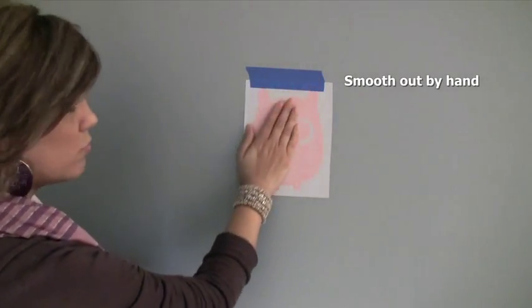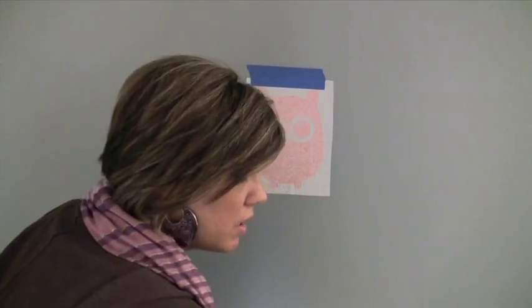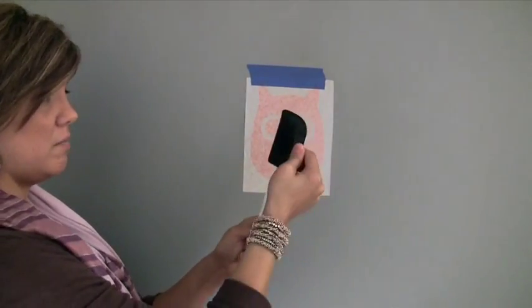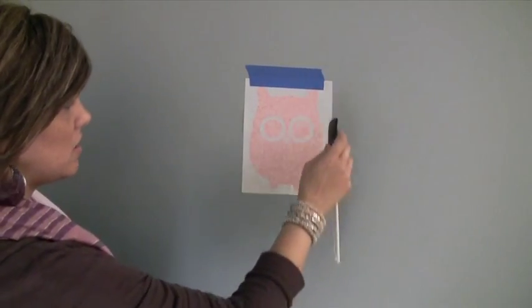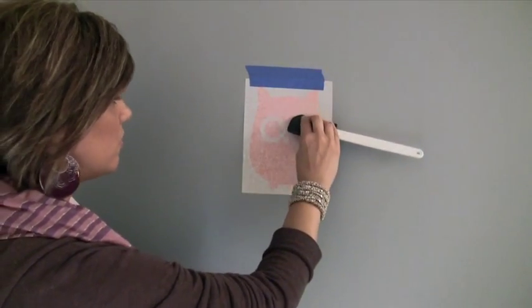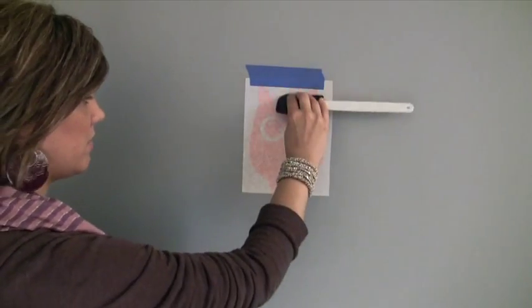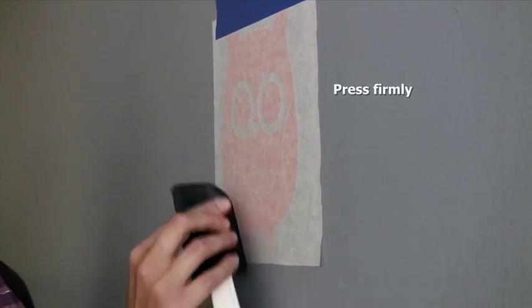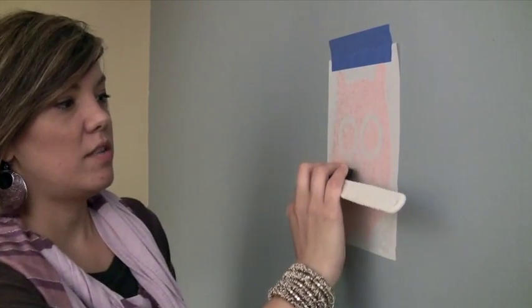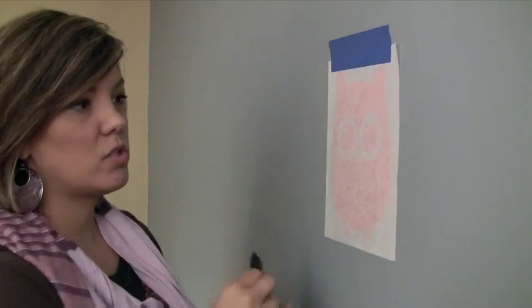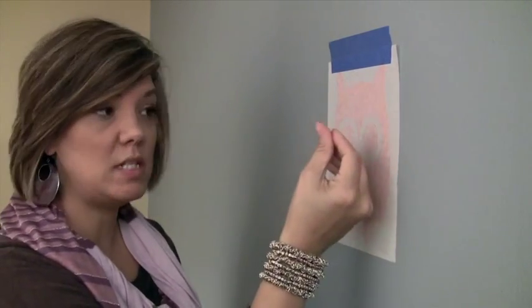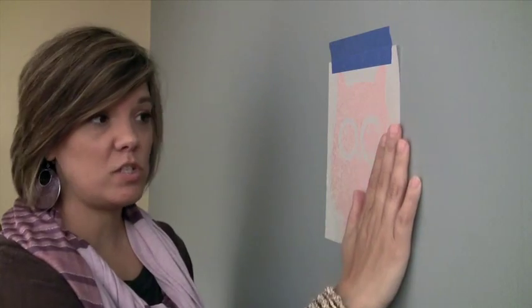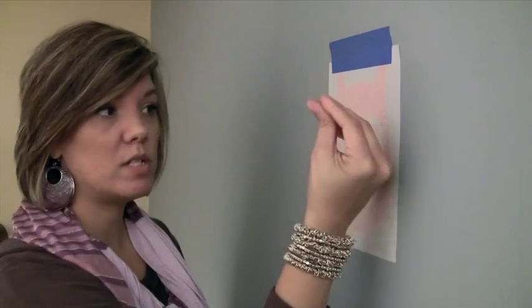This gets rid of any big air bubbles, and now we can take our cake spatula, again, making sure it's rigid, and we can start to burnish the decal. Burnishing is just a fancy word for pressing firmly or hard against the wall. So as you're burnishing the decal to the wall, you will start to see the texture of the paint show through the decal. The decal is three mils thin, which is basically the thickness of a sheet of paper, so the texture will come through, and that's what makes it look completely painted on.